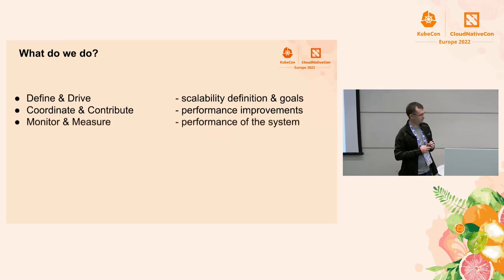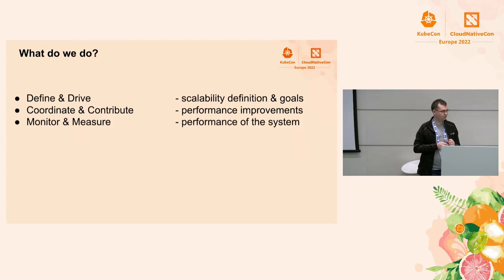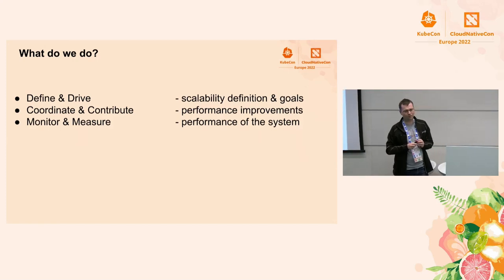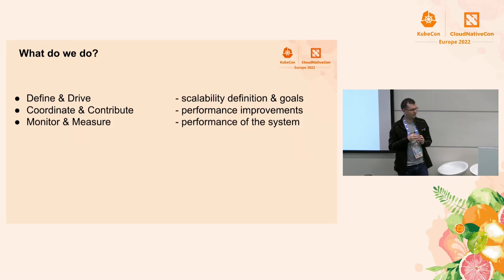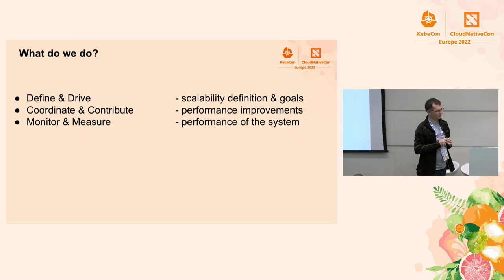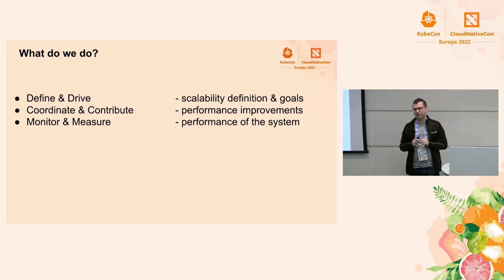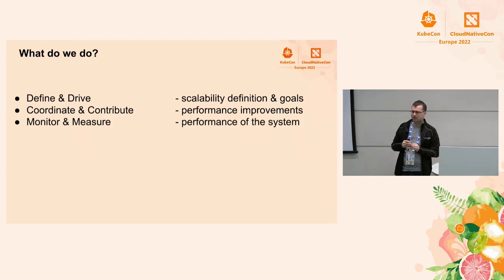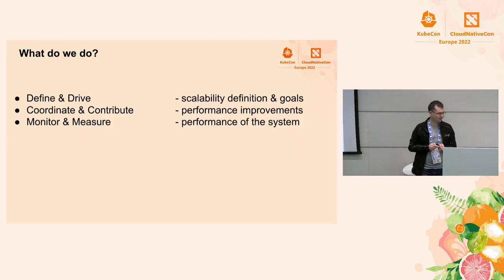The next thing is ensuring or checking where we actually are. We know where we'd like to be based on the first item, but we don't always know where exactly we are now. So monitoring and measuring where exactly we are is pretty critical to understand how far we are from our goals and whether there's any work we have to do in this area.